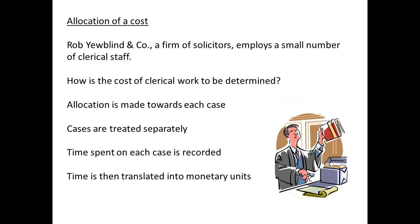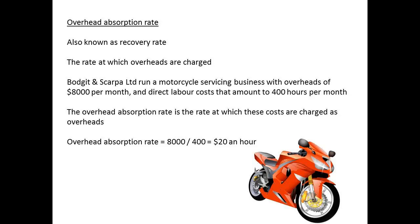Here is a very typical problem relating to allocation of costs in a service industry. How do we allocate costs for a solicitor's office? The clerical staff will be working for all partners and for all the clients. We need a unit of measurement here. The easiest method to use for measurement is the measurement of time, determining how much time is spent on each client. The time spent can then be translated into monetary units. The rate at which we charge overheads is referred to as the overhead absorption rate, or sometimes as the recovery rate.